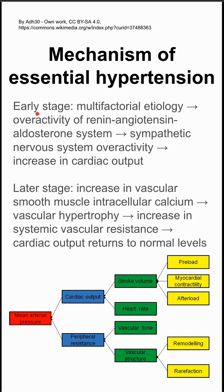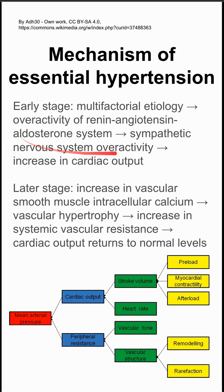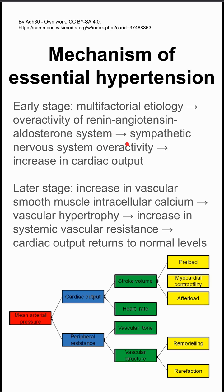In the early stages, you have a multifactorial etiology that leads to overactivity of the renin-angiotensin-aldosterone system, which then causes overactivity of the sympathetic nervous system and increases your cardiac output. So in the beginning, something is causing your body to work harder — it could be salt concentrations, it could be stress, it could be high cortisol — all leading to high RAS, which leads to high sympathetic activation and a high cardiac output.